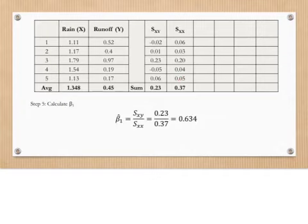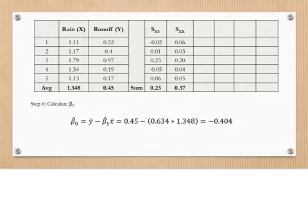Now that we have the totals for Sxy and Sxx, we can calculate beta 1. We divide Sxy by Sxx and get a beta 1 of 0.634. We can calculate and save this value in a cell somewhere in the spreadsheet, so that we can refer to it for calculating beta 0, which uses the mean y value 0.45, the beta 1 we just calculated, and the mean x value 1.348 to get a beta 0 of negative 0.404. We'll save this value in a cell somewhere in the spreadsheet.